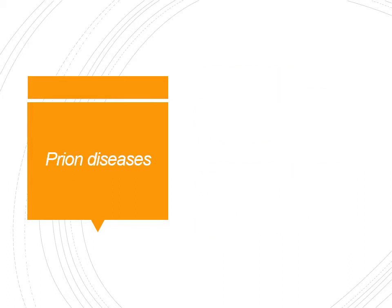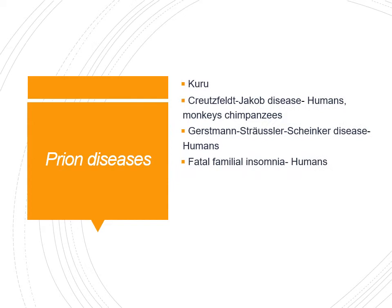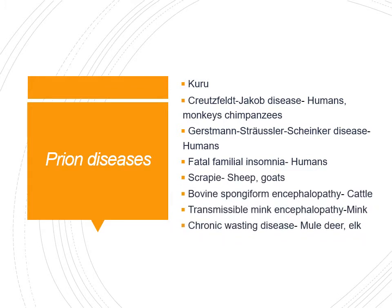Among prion diseases in humans: kuru disease, Creutzfeldt-Jakob disease (CJD) which is the most common in humans, Gerstmann-Sträussler-Scheinker disease, and fatal familial insomnia. In animals: scrapie in sheep and goats, bovine spongiform encephalopathy in cattle, transmissible mink encephalopathy in mink, and chronic wasting disease. At minimum, the human prion diseases must be learned.